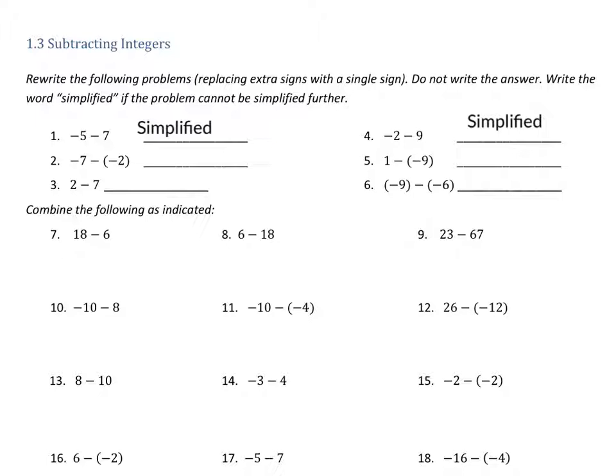Well, what about problem 2? This one we have that minus that negative 2 right there, which means we can simplify that one. So we can't write 'simplified' on this one. We need to write what it would look like to make it simplified. We're not solving it.